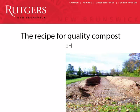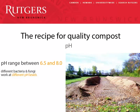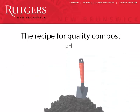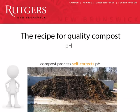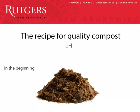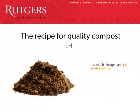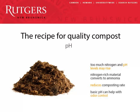Generally speaking, compost microbes tend to thrive best in a pH range between 6.5 and 8.0, but different bacteria and fungi work best at different pH levels. Although composting rates will slow beyond the optimal range, the compost process self-corrects pH, so you often need not actively manage it. In the early days of the process, pH may drop to 4.0, but towards the end it often settles in at the 7.5 to 8.0 range. If your mix includes too much nitrogen, you may see pH rising as nitrogen-rich material is converted to ammonia, which further increases alkalinity. This will reduce the composting rate and your pile may lose nitrogen as ammonia volatilizes off. A slightly basic pH also may help with odor control.